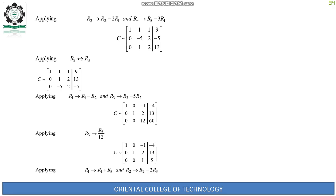Apply row operation R2 ↔ R3. C becomes: 1, 0, 0; 0, 1, 2; 0, -5, 2 with constants 9, 13, -5.